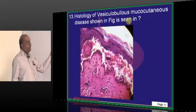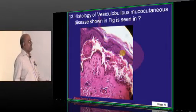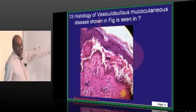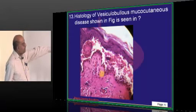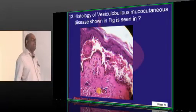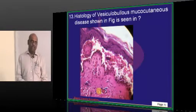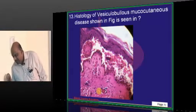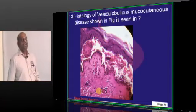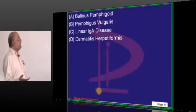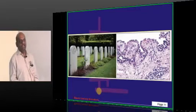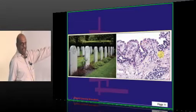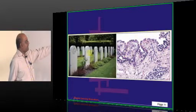A patient has a vesiculobullous mucocutaneous disease. What is this appearance of the cells? It looks like a tombstone — tombstone appearance. There are mainly two vesiculobullous lesions: pemphigus vulgaris and bullous pemphigoid. Tombstone appearance is a feature seen in pemphigus vulgaris, where the degenerated keratinocytes and their nuclei look like tombstones.